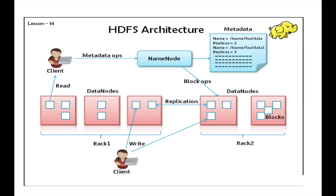Now I am going to explain the HDFS architecture in terms of a diagram. The multiple parts include name node, client, rack, and metadata operations. There is one name node, then rack 1 and rack 2. Rack 1 is divided into 3 shells and rack 2 is divided into 2 shells. In the replication process, rack 1 and rack 2 are equal because the total number of blocks are the same.